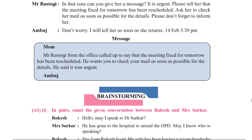For the answer, write: 14 Feb on the first line, then 3:30 PM below that, then 'Mom' as the recipient. Body: 'Mr. Rastogi from the office called to say that the meeting fixed for tomorrow has been rescheduled. He wants you to check your mail as soon as possible for the details. He said it was urgent.' Writer's name: Ambuj. This is very easy and you will get good marks here.